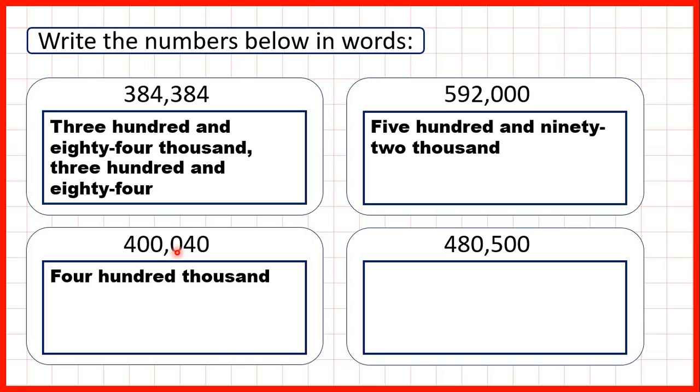Because we have a zero in our hundreds, we just have 40. So we can write and forty. Now notice here, when we were writing the number in words, we didn't have a comma after the word thousand.